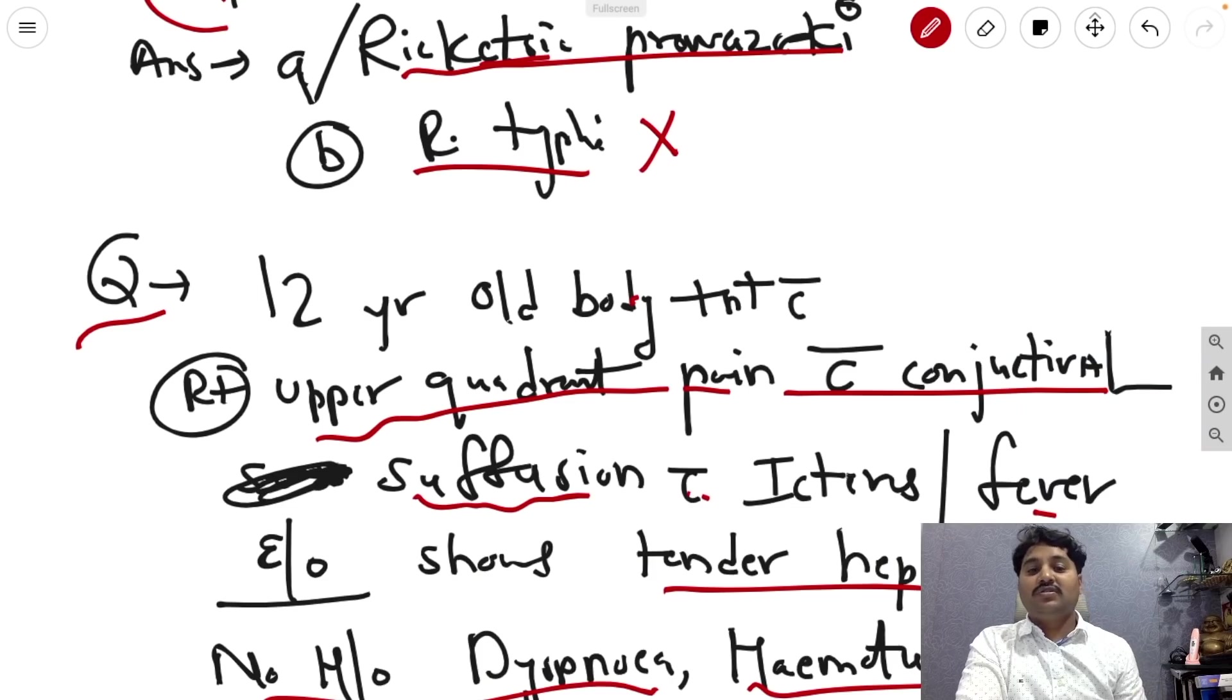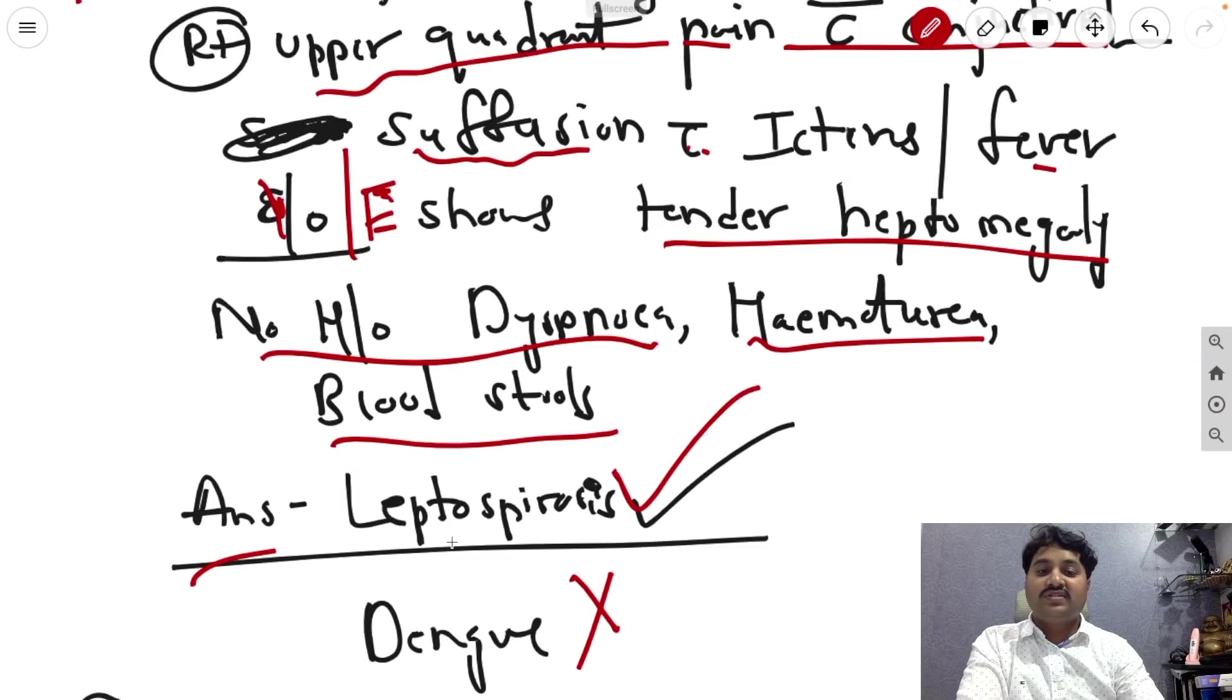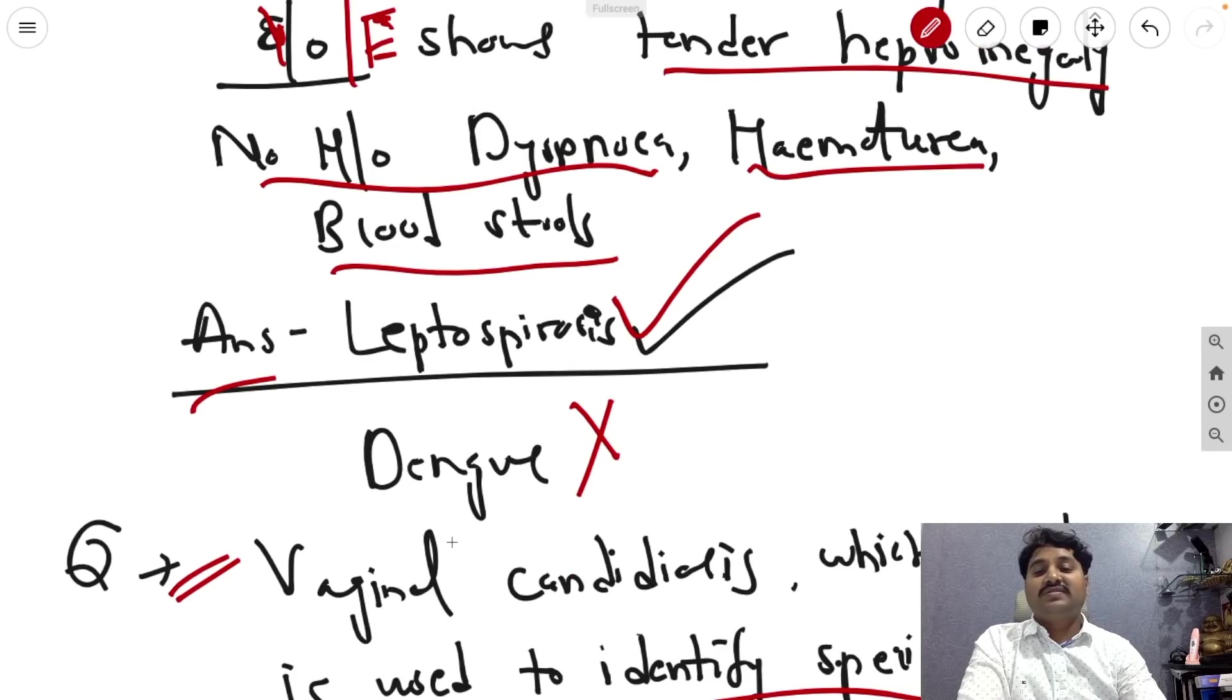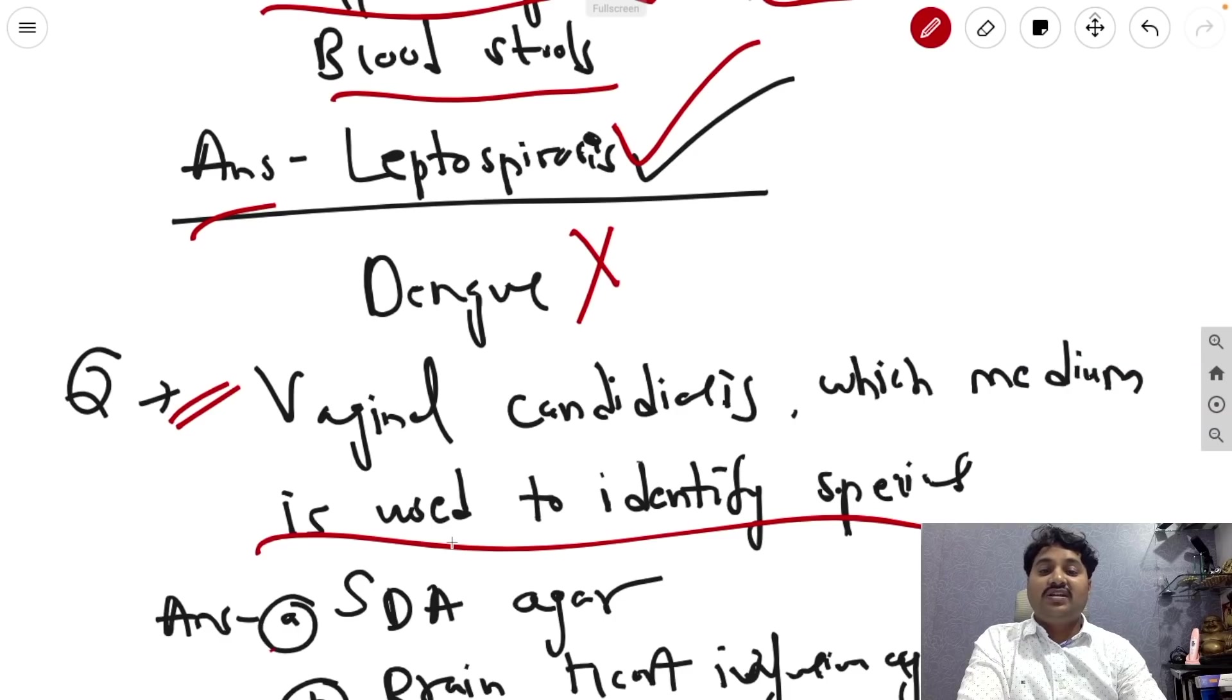Next question, 12 year old baby present with right upper quadrant pain with conjunctival suffusion with icterous fever. On examination it shows tender hepatomegaly. No splenomegaly, dyspnea, hematuria seen. Bloodshot is not seen. So the answer is leptospirosis. As you all know this triad is clearly seen in leptospirosis.